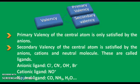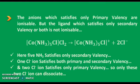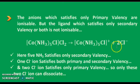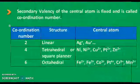NH₃ and H₂O are neutral ligands. Anions that satisfy the central atom's primary valency are ionizable. But anions that satisfy the secondary valency are not ionizable. The ammonia molecules satisfy cobalt's secondary valency — this is not a Cl⁻ anion; this does not dissociate. But the two Cl⁻ ions satisfy cobalt's primary valency only, so these two Cl⁻ ions dissociate.